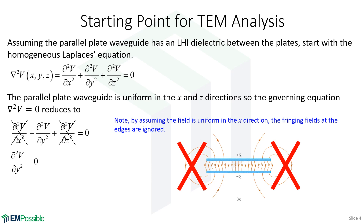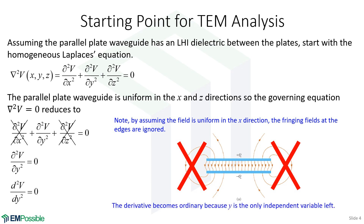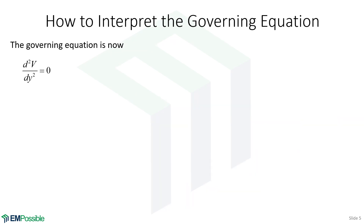In that case, we would have to do a more complicated analysis. Since this reduces to just one dimension, we are going to ignore the fringing field and pretend the field is uniform between the plates. There is only one independent variable left, so our partial derivative becomes an ordinary derivative. That is going to make this very easy to solve. Our governing equation is just the second-order derivative of V in the Y direction equals zero — a one-dimensional Laplacian.